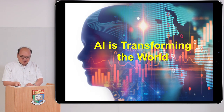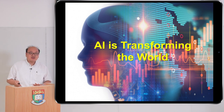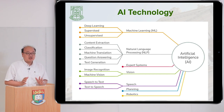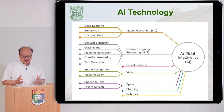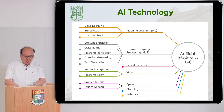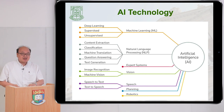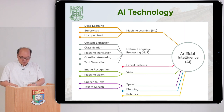AI is transforming the world, and our program focuses on five concentrations. The first is AI Technologies. We have machine learning tools, natural language processing to handle text data, computer vision to handle images, speech-to-text and text-to-speech technologies, and robotics — all coming together to help us build machines or systems that can try to imitate what a human thinks and how a human behaves.